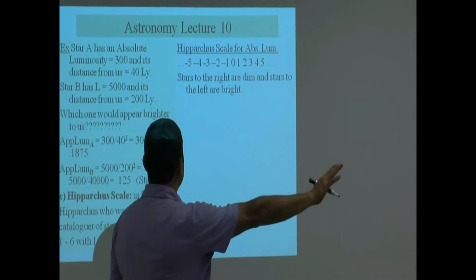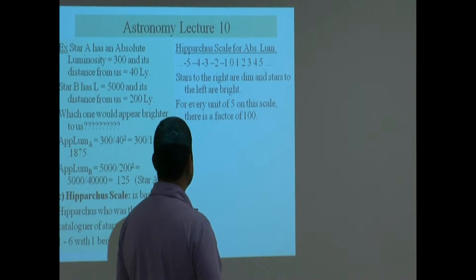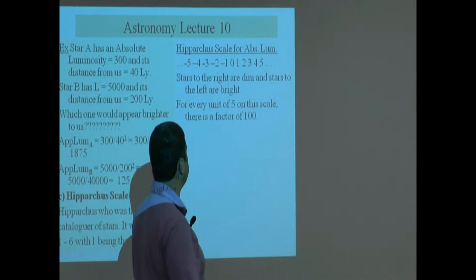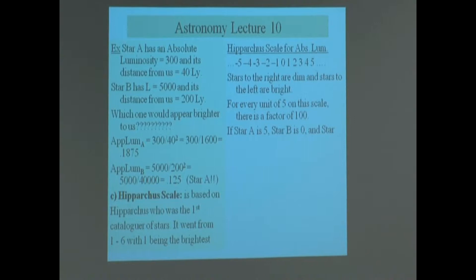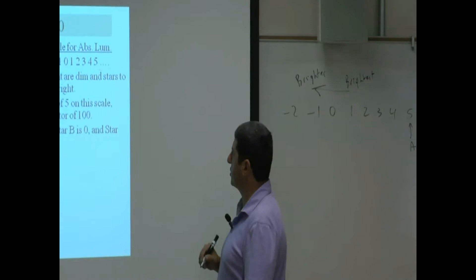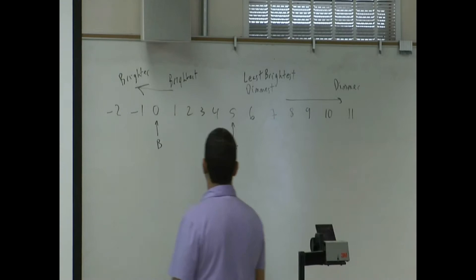For every unit of 5 on this scale, there is a factor of 100. For every unit of 5 on this scale, there's a factor of 100. So if star A is 5, let's call this is star A.